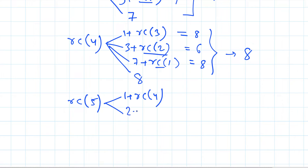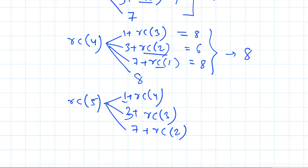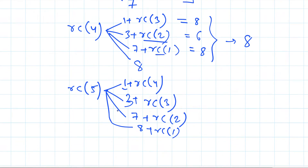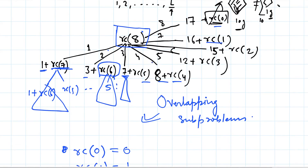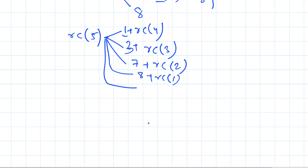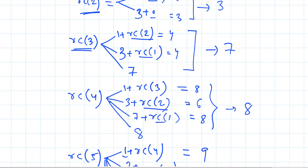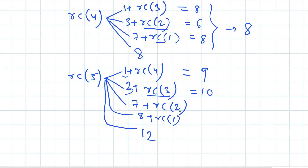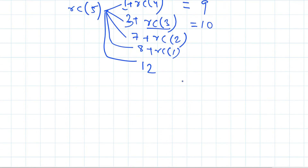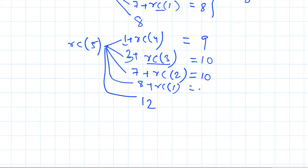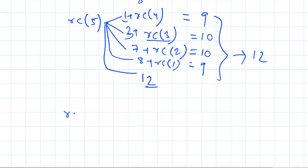For RC(5), we evaluate: one plus RC(4) = nine, three plus RC(3) = ten, seven plus RC(2) = ten, eight plus RC(1) = nine, and twelve plus RC(0) = twelve. The maximum is twelve, so RC(5) is twelve.